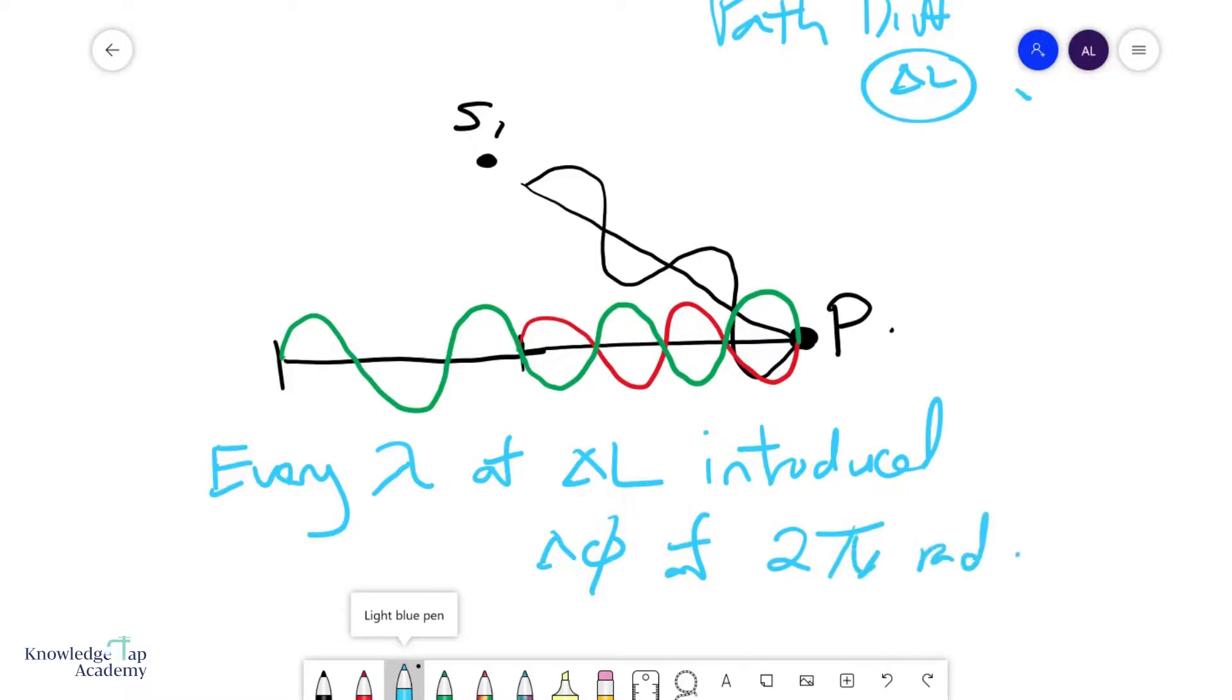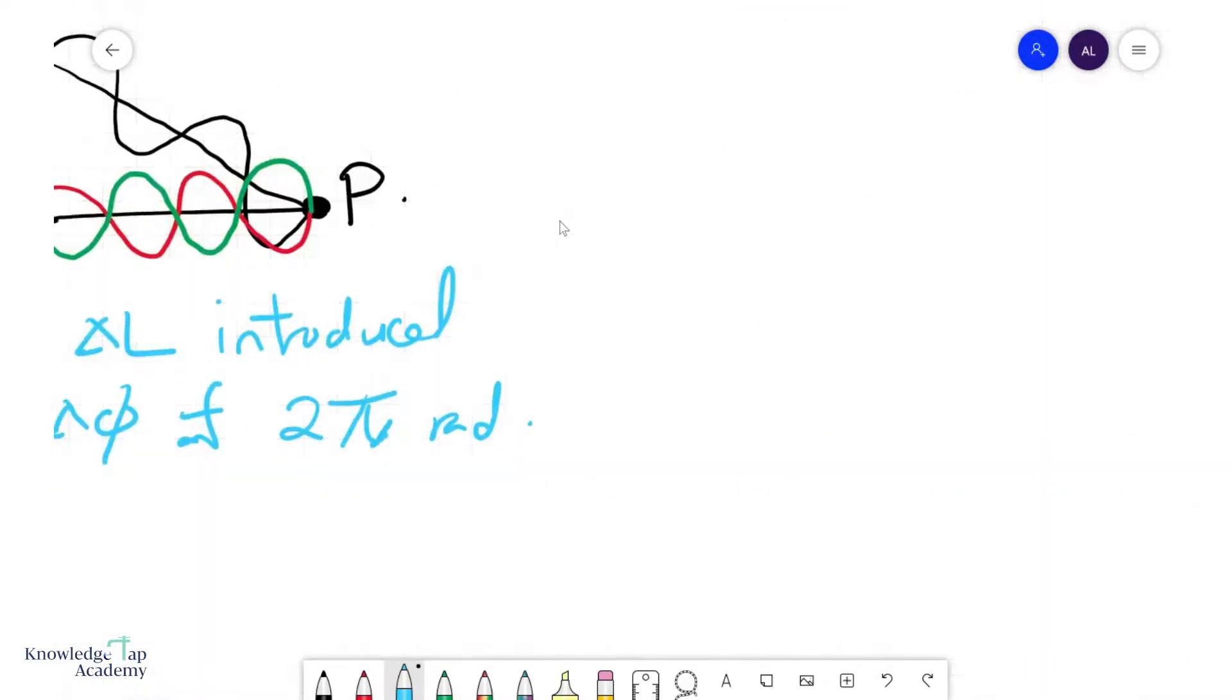Now, so a nice way to think of this is that the phase difference due to path difference is basically your path difference divided by, as a fraction of the wavelength, times 2π.